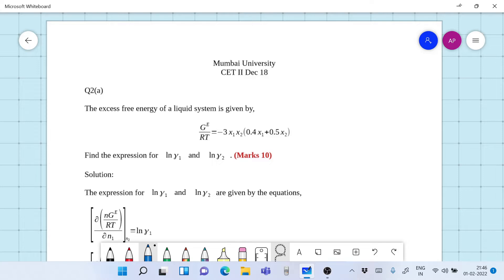The question is 2a. The excess free energy of a liquid system is given by g by RT equals minus 3 x1 x2 0.4 x1 plus 0.5 x2. Find an expression for ln gamma 1 and ln gamma 2.